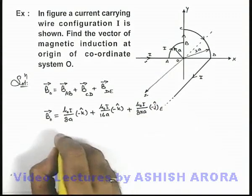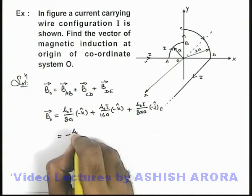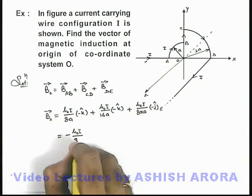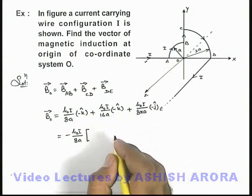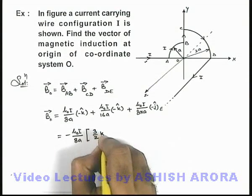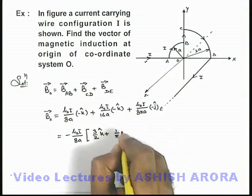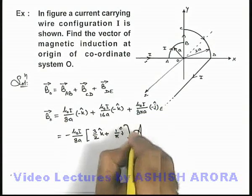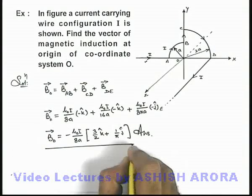So on simplifying, we get the result as minus μ₀I/8a times (3/2 k̂ + 1/π ĵ). That'll be the answer to this problem - this is the magnetic induction at the origin of this coordinate system.